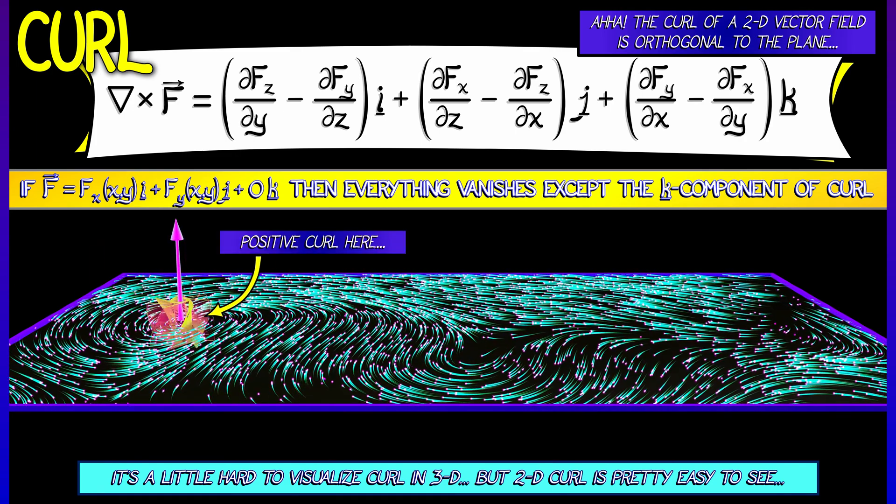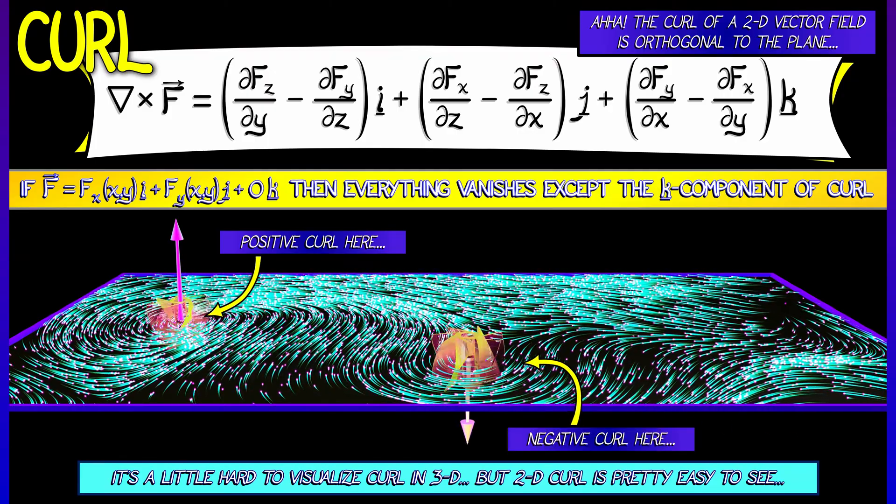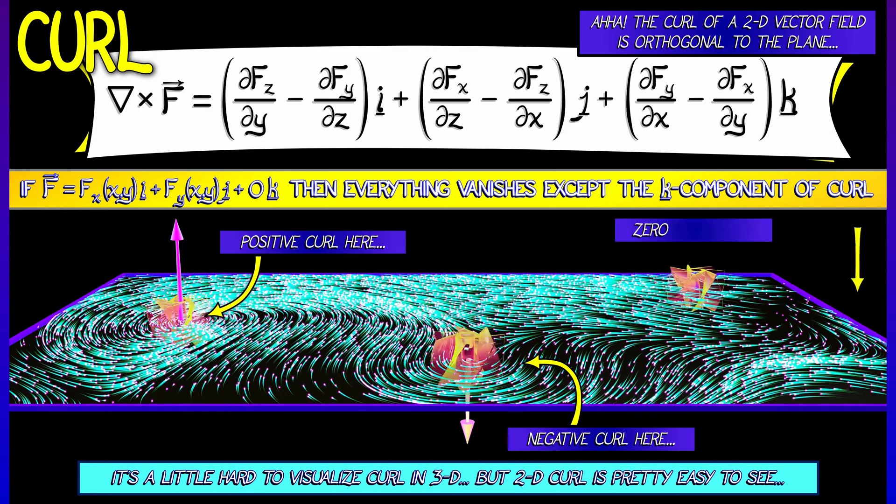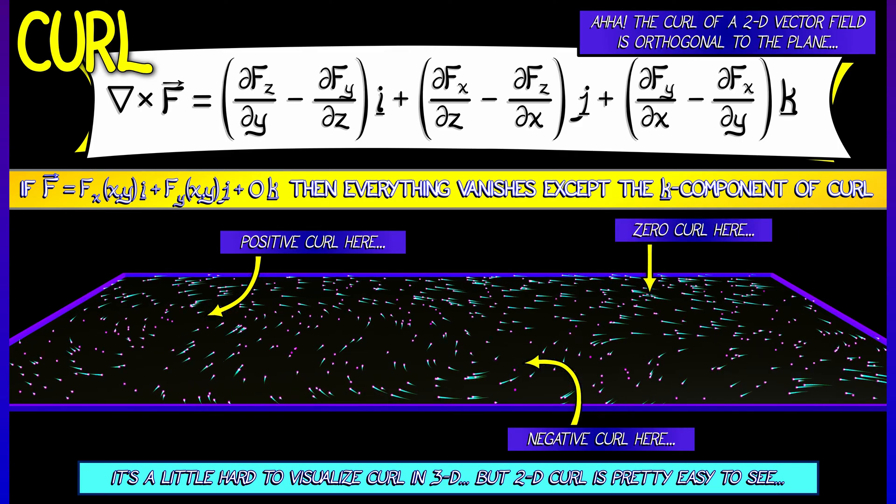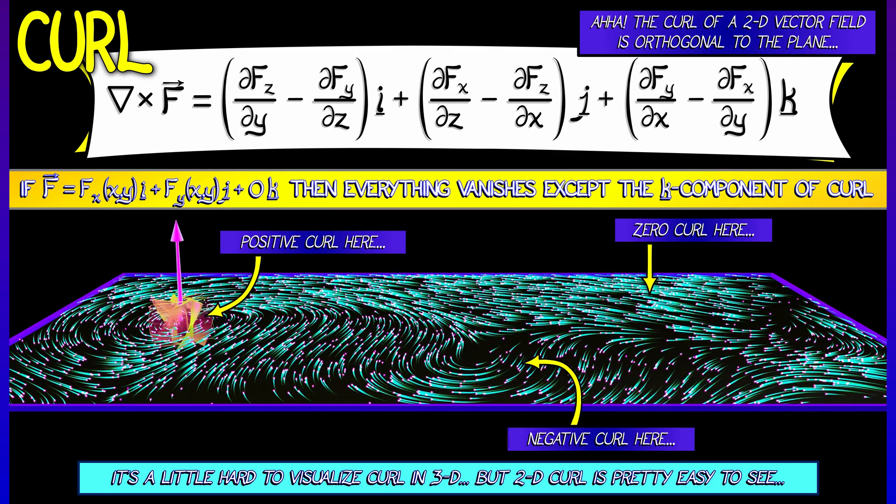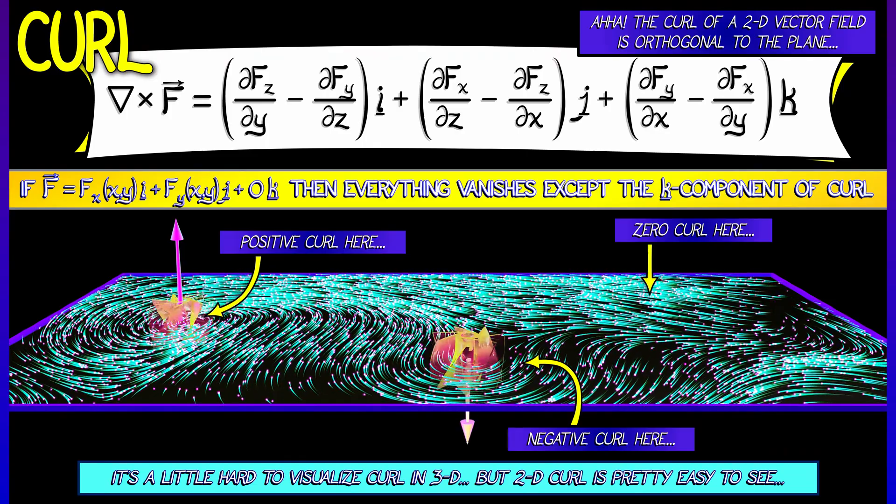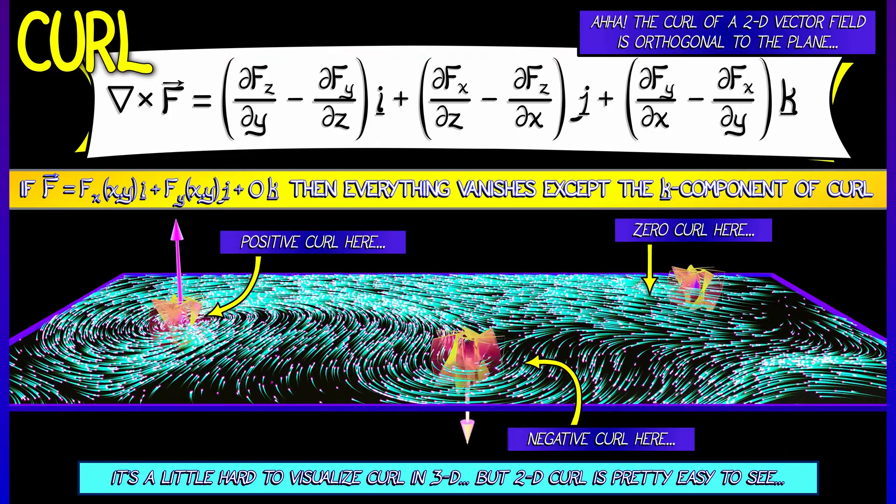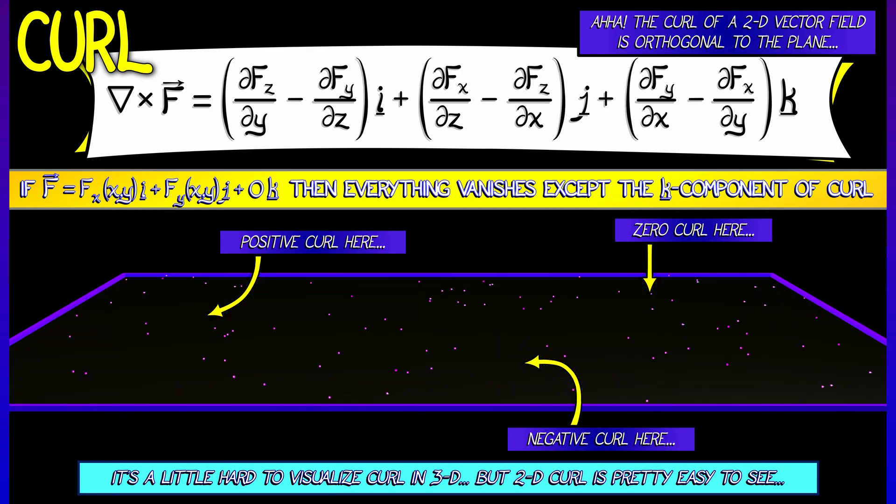That means when you have positive circulation density, it's really positive K. Negative circulation density means that that curl vector field is pointed in the negative K direction. You're going to have to go back and reinterpret what you learned about curl density in the plane as really being a vector field, but a vector field that points strictly in the K direction.